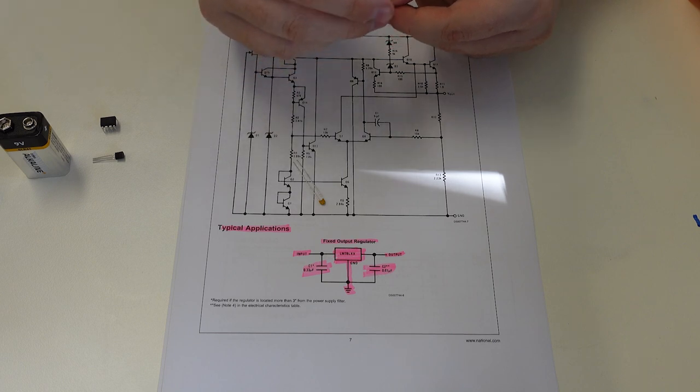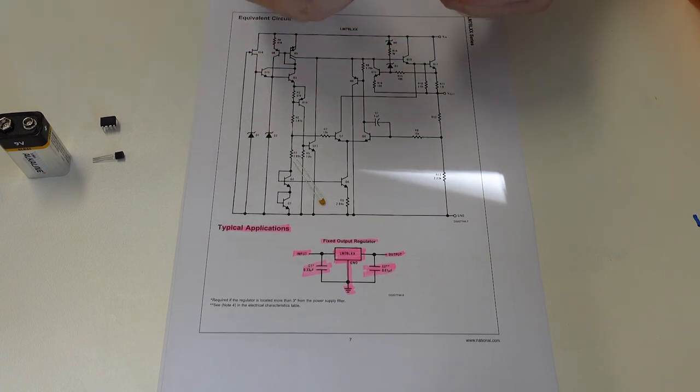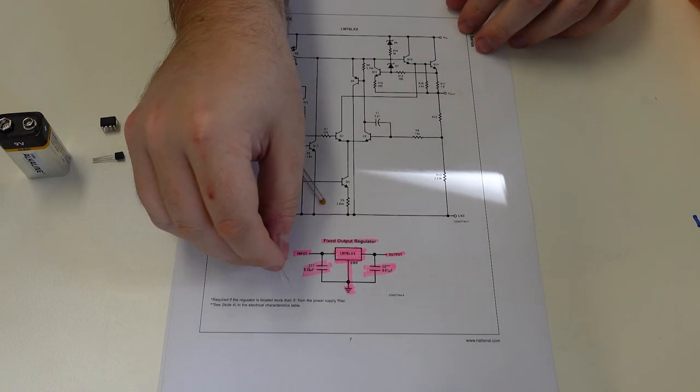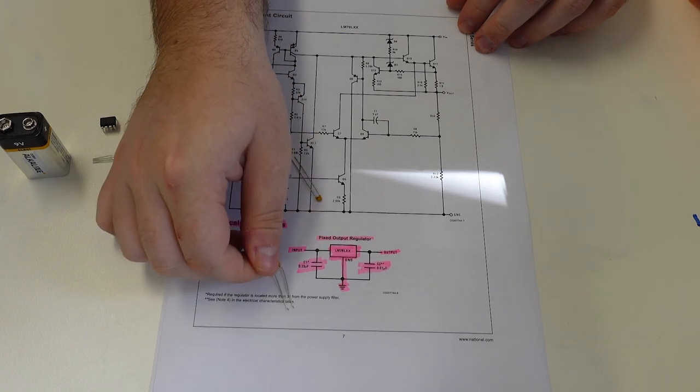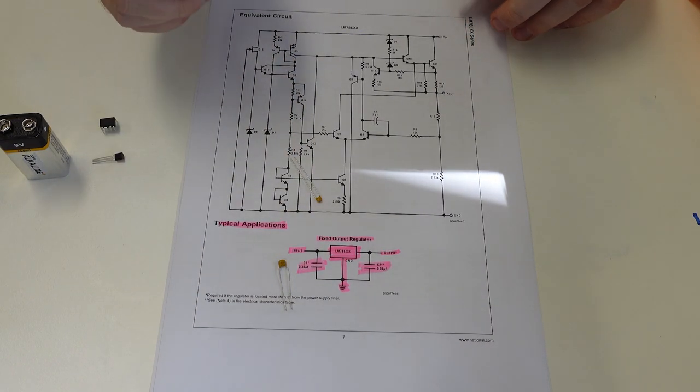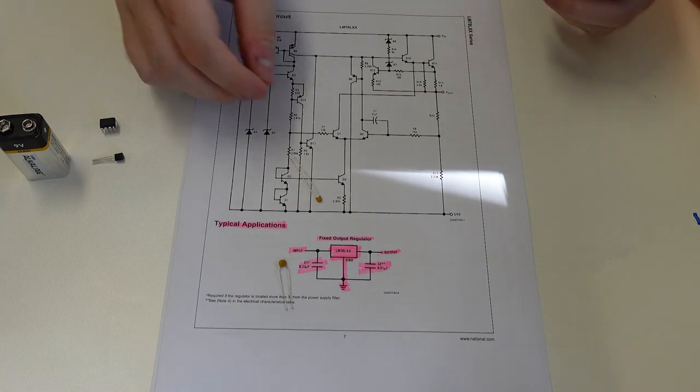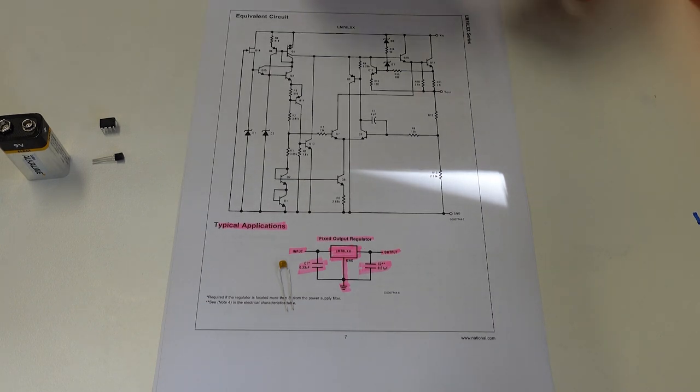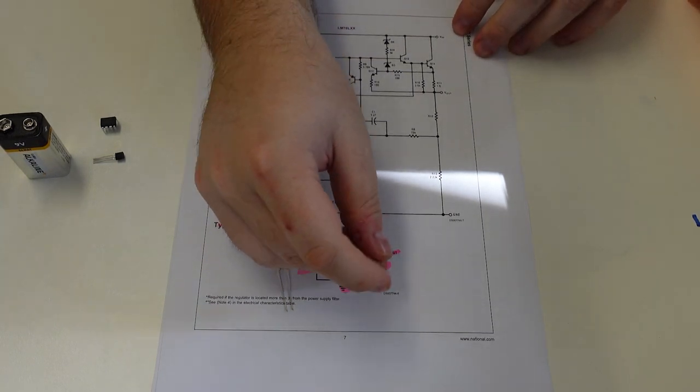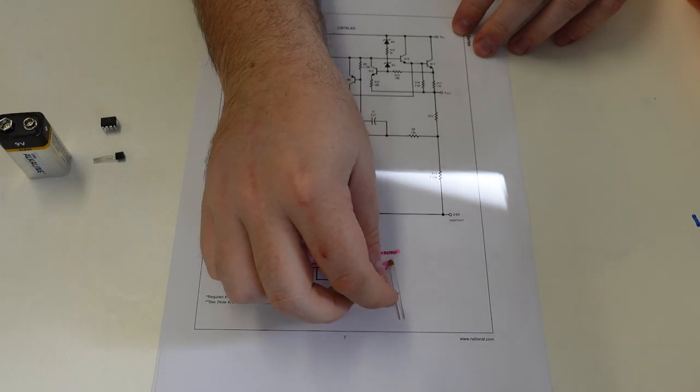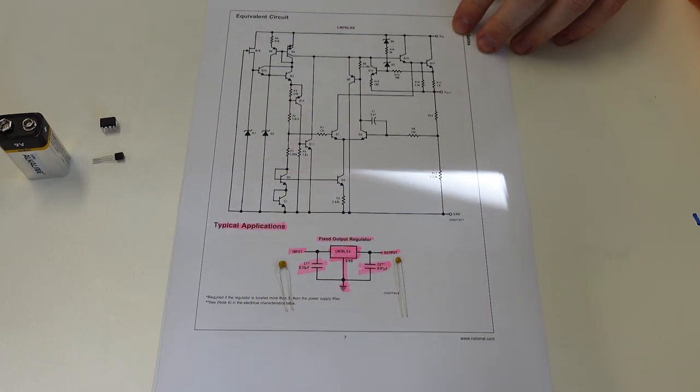One with the slightly shorter legs here says 334, which means that's our 0.33. The way you work it out is it's a 3, 3, and then the 4 is how many zeros are on it. So it's a 0.33. And then we've got a 104, which is again a 1, 0, and then 4 zeros. So that's a 0.01.